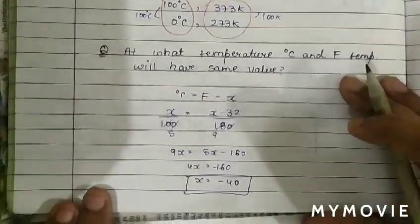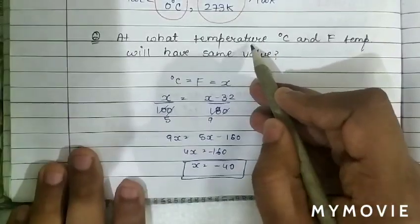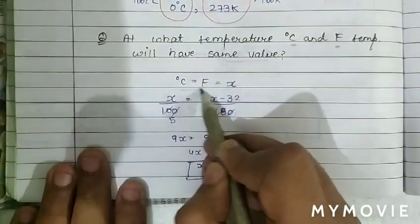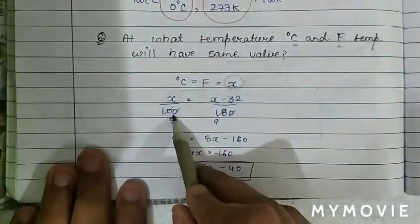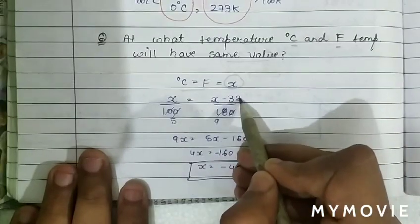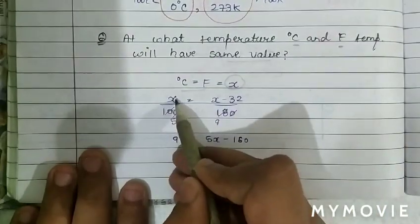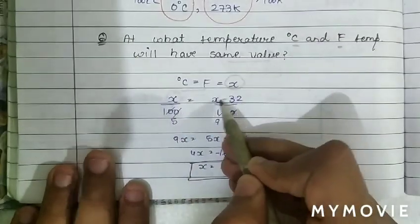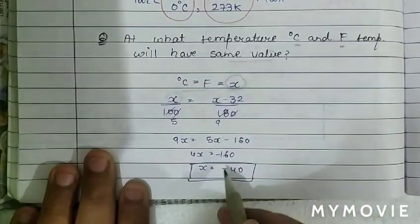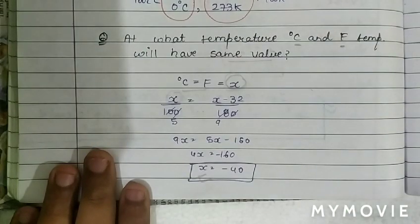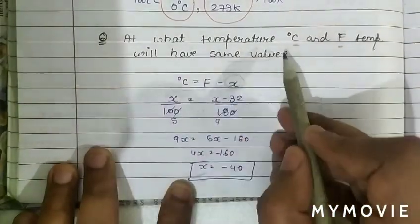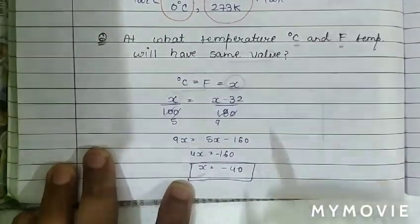A classic question: at what temperature do the Celsius and Fahrenheit scales have the same value? Let that temperature be x. Setting the two scales equal — x/100 = (x − 32)/180 — and solving, we get x = −40. So at −40, both Celsius and Fahrenheit have the same value.